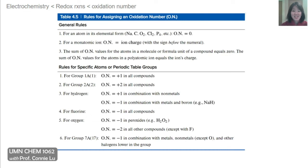Finding an oxidation number depends on certain rules, covered in chapter four. Here's a handy table as a reminder. At the top are general rules, and at the bottom are rules for specific groups or atoms. We'll go through these one by one with examples.